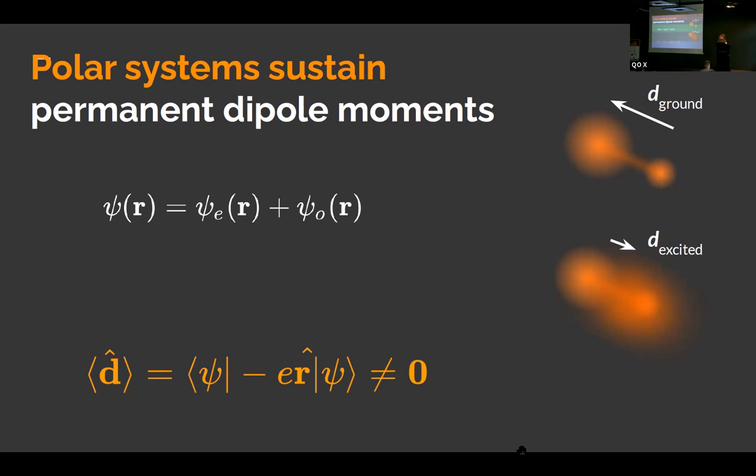But first, let me just tell you about the mechanism of that surprising effect. Polar systems are characterized with permanent dipole moments. When you have an eigenstate of a polar system, the system does not have an inversion symmetry, which means the wave function may be neither even nor odd. There are these two contributions, and due to that, the average dipole moment in an eigenstate may be non-zero. And this may be non-zero both for the ground state and for the excited state, which means you can have permanent dipoles in these two states. And except for that, you also have a transition dipole moment that governs transitions between the states.